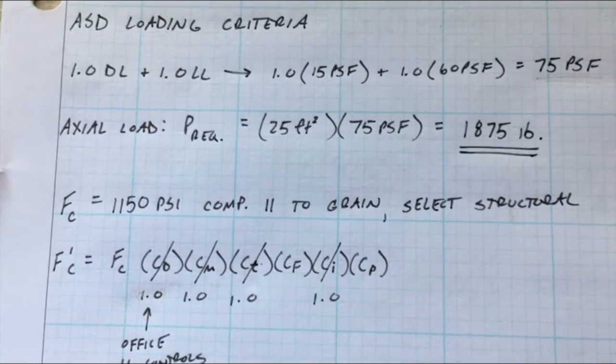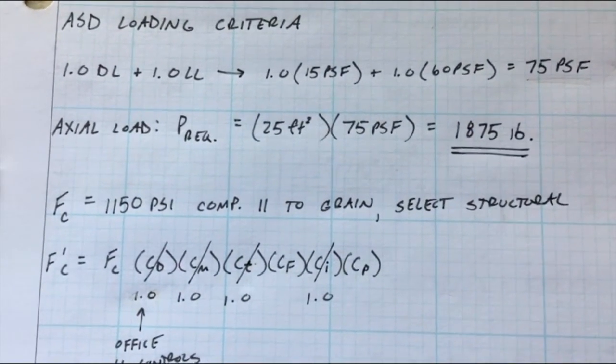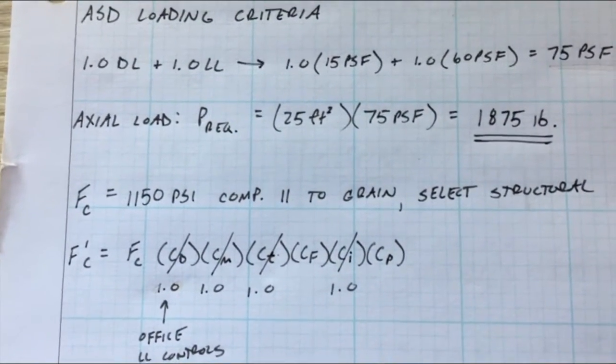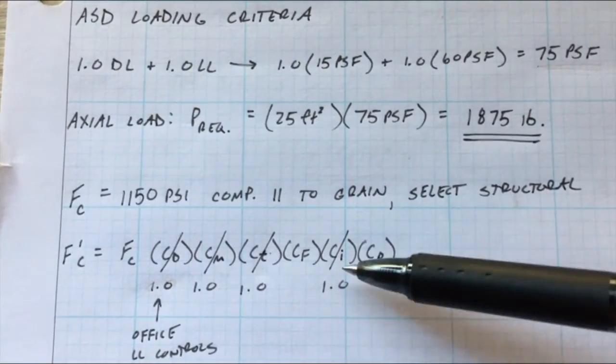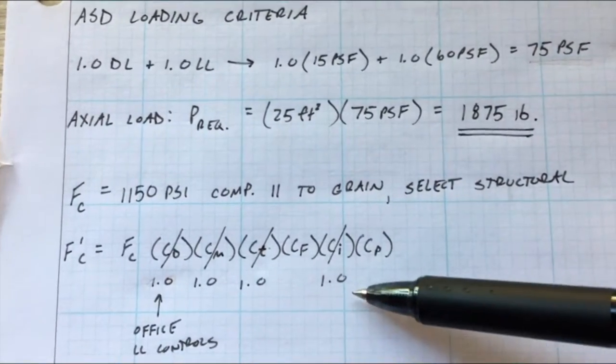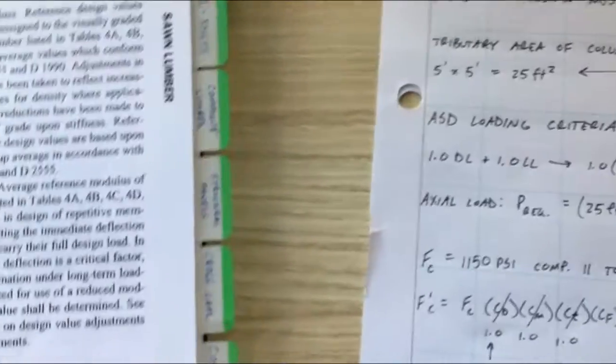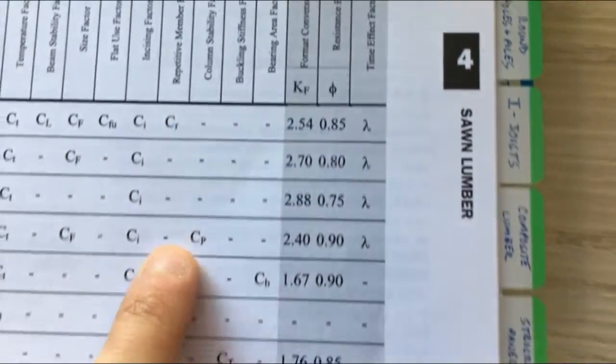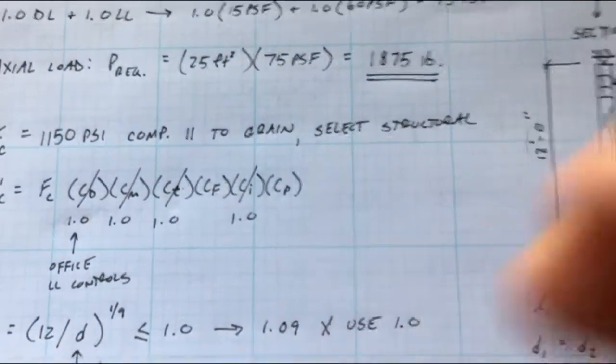I won't get into that right now. Almost always your incising is 1.0. That's if they trim up the wood. I'm not actually specifically sure, I'd have to look at the definition if it applied, but it almost never does if it's just typical lumber that you're using. You can always go to the CI and definition and see what specifically it calls for. And then you have CP. What CP is, if we go back, is your column stability factor.